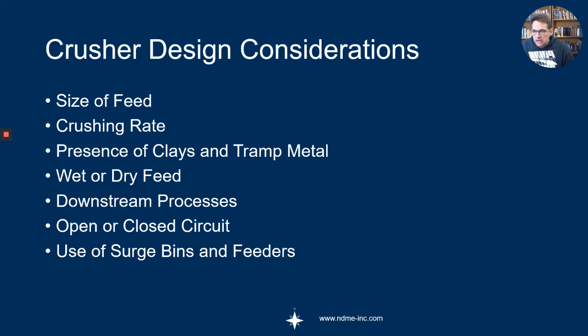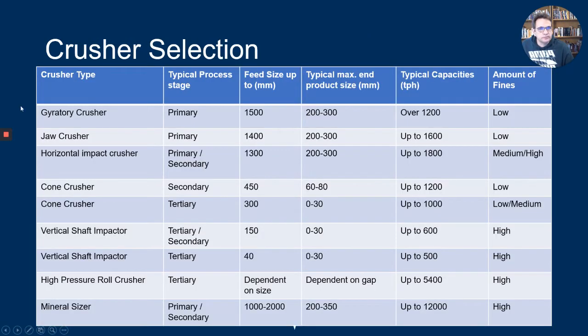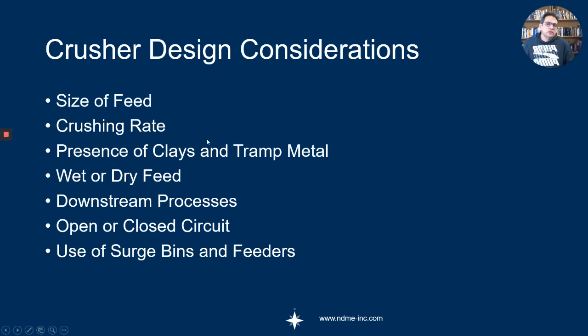When you look at a crusher, each case is actually fairly unique. It'll be determined by the feed size, the crushing rate, the presence of clays and tramp metal, feed wet or dry, downstream processes, whether it's an open or closed circuit. Often you need a very narrow size grading—a lot of these devices give a fairly wide size distribution of products. Then the use of surge bins and feeders—having a surge bin ahead of a crusher is almost an absolute must. It costs money, but it's certainly worth it once you're in operation.